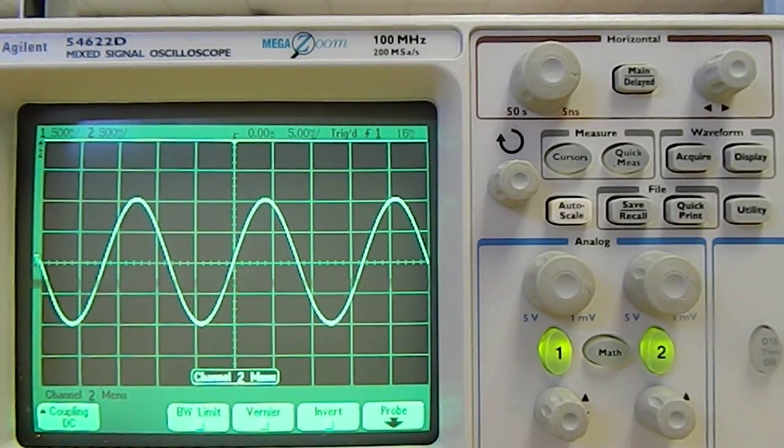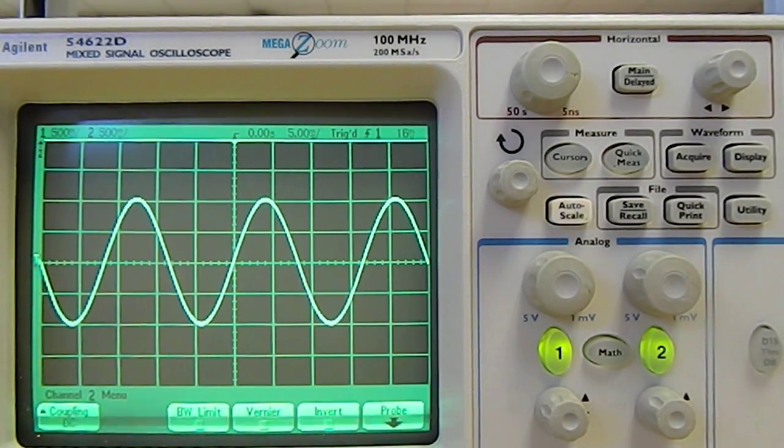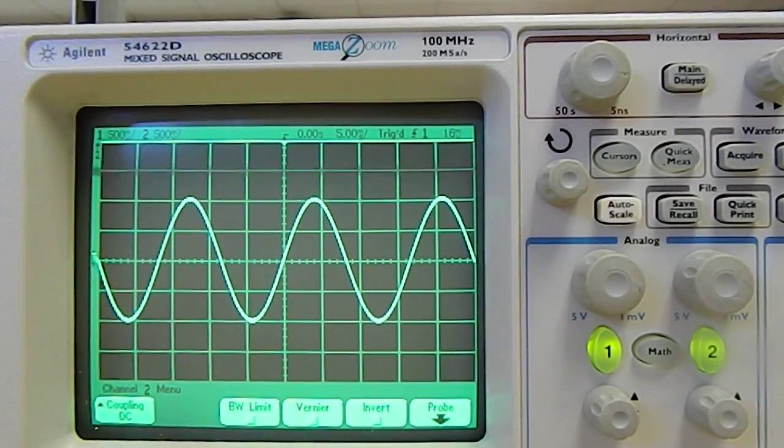This is an instructional video for the Agilent 54622D Mixed Signal Oscilloscope, intended to show you how to use the quick measure function. I have a 60 Hz sine wave set here with plus and minus 1 volt.